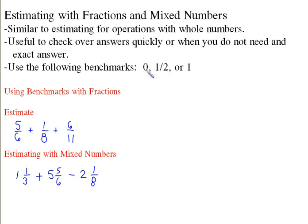If there's a fraction that's close to 0, we use 0. If it's close to half, we use a half. And if it's close to 1, we use 1. If we were asked to estimate 5/6 + 1/8 + 6/11, we would say 5/6, that's close to 1.